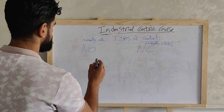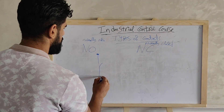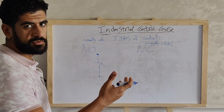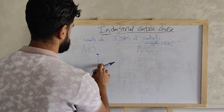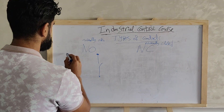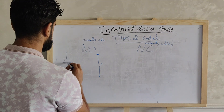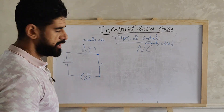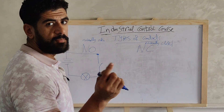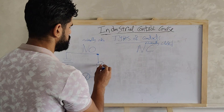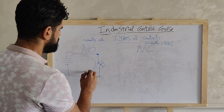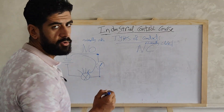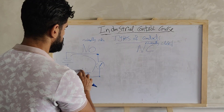Normally open means it is an open contact, but when we apply an action to this contact it will be closed. For example, if this contact is connected to a DC battery and a DC lamp, the lamp will be off, but when we apply an action the contact will close, current will flow, and the lamp will illuminate. When we undo the action the contact returns to normally open and the lamp stops illuminating.